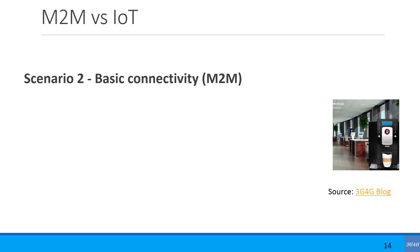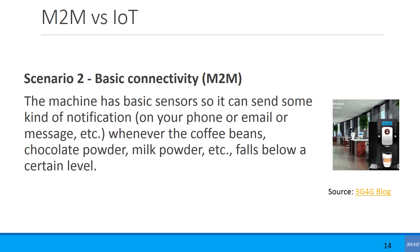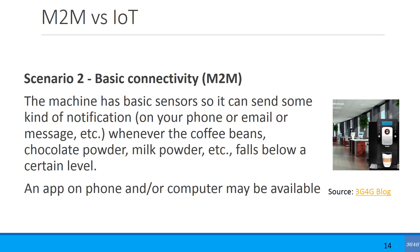In an evolution of the previous version — this has some basic connectivity — this is an example of M2M. The machine now has basic sensors and can send some kind of notification. You can get a notification on your phone, email, SMS, or WhatsApp. Whenever the coffee beans, chocolate powder, or milk powder falls below a certain threshold, you get a notification. Rather than a person going to check the machine, the machine will notify — this is a basic M2M example.